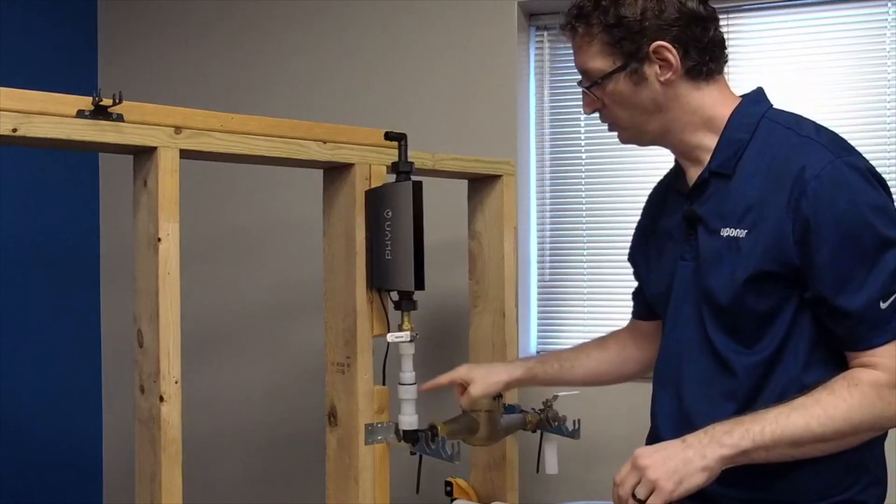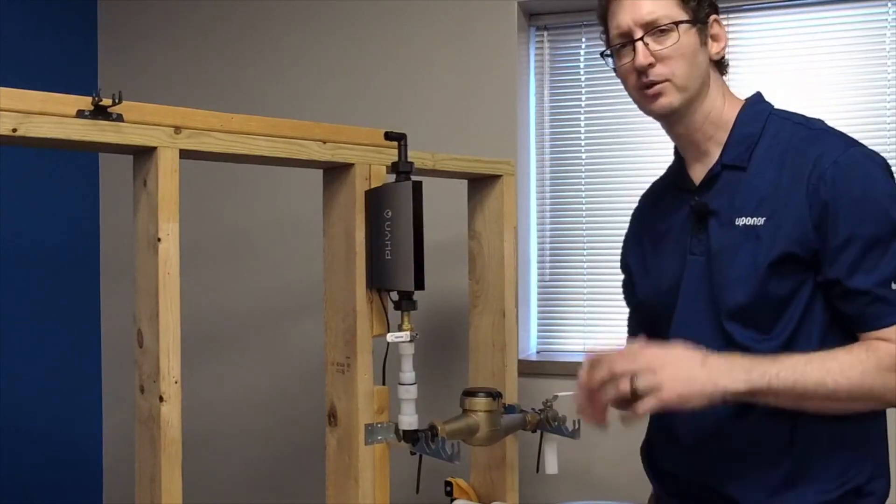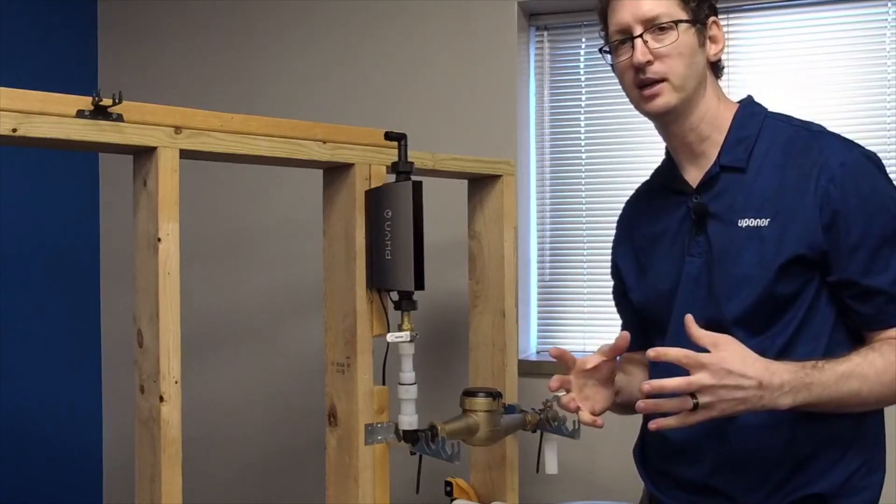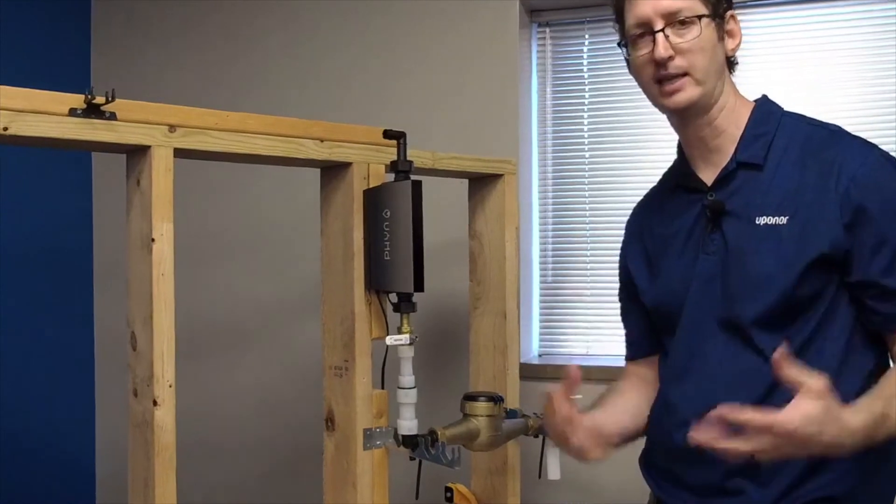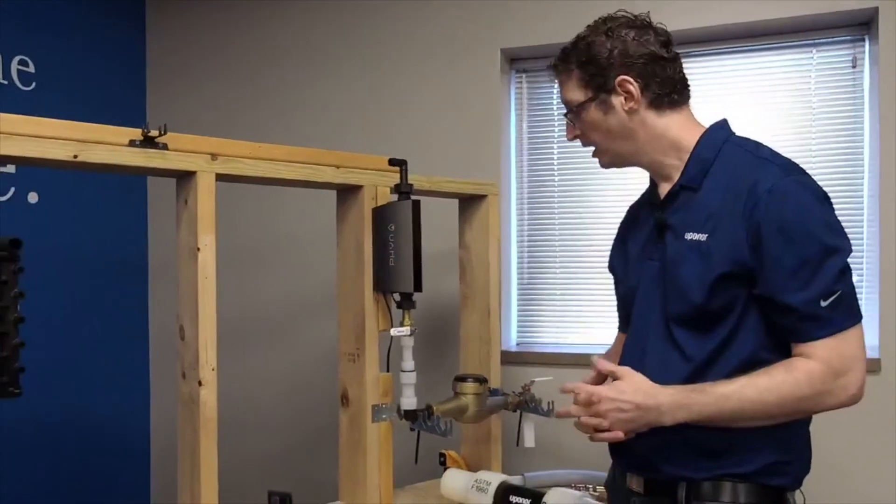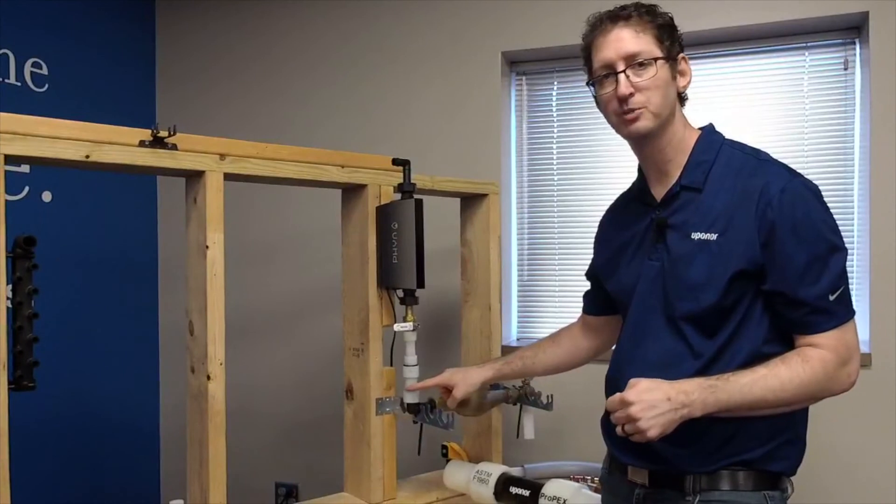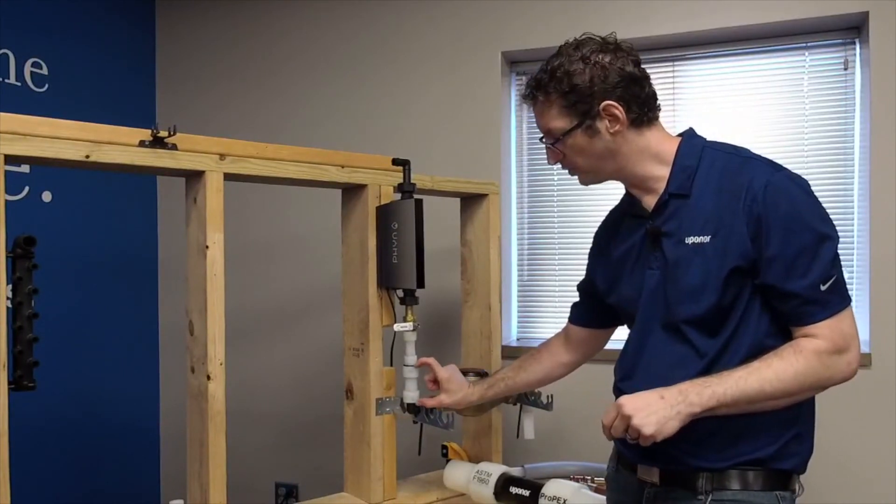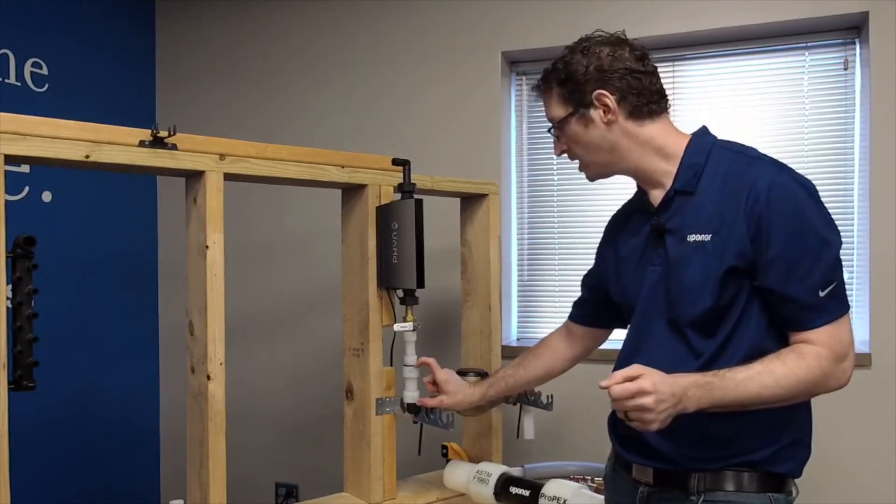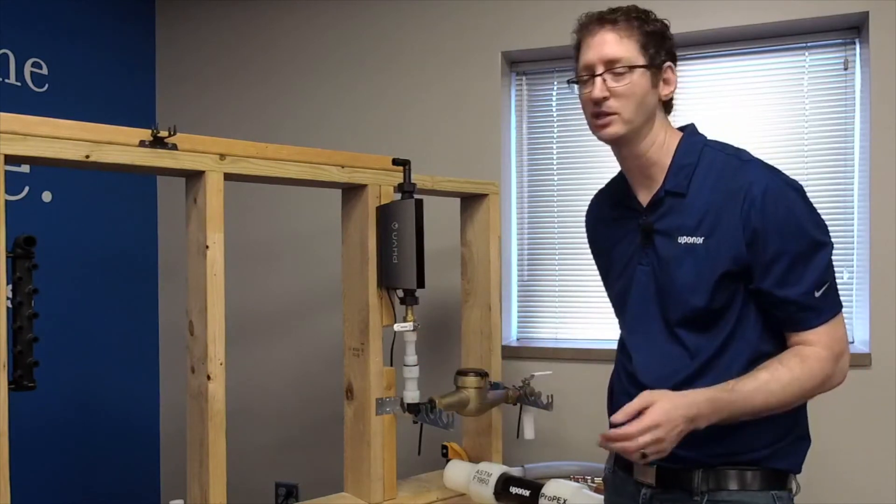So I do want to talk about these two pieces of pipe right here. So there are minimum cut lengths that you have to follow when you're connecting certain pipe sizes. For Upanor 1-inch pipe, the minimum cut length from the shoulder to shoulder here is 3.5 inches. For 3.4-inch pipe, the minimum cut length is 3 inches.